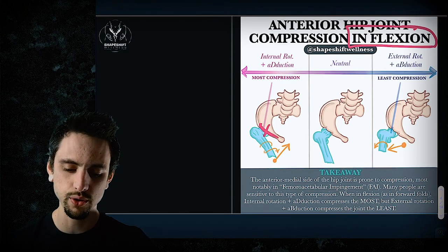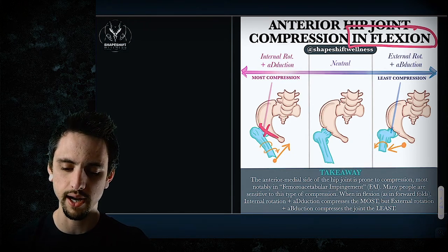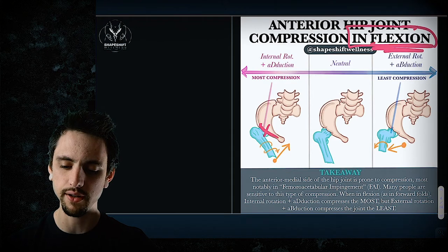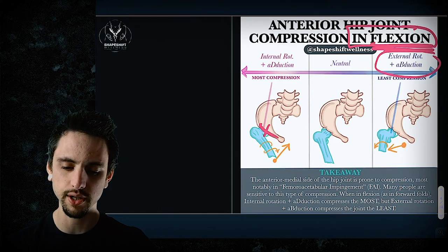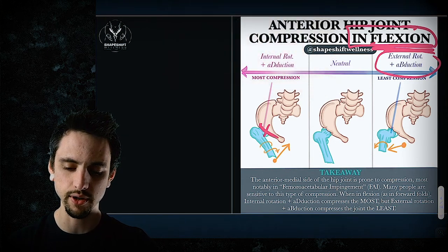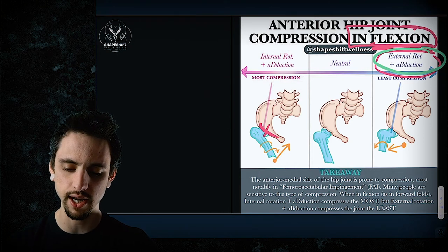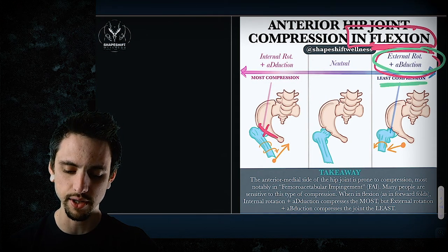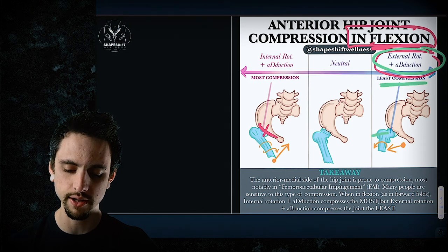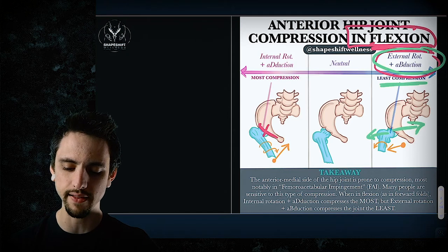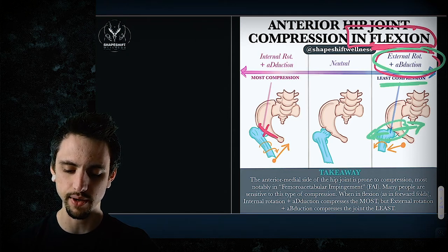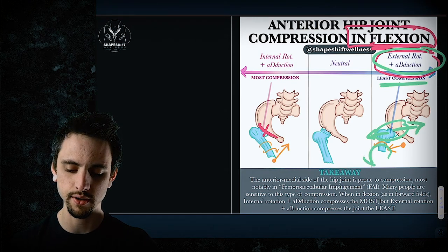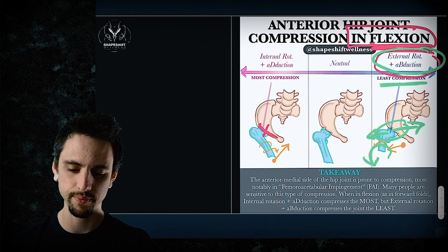So that's the most compression. Neutral would be middle of the road. And then in flexion, external rotation and abduction is going to be the best. So external rotation and abduction is going to have the least amount of compression right here because you're drawing this bone out away. You're widening that space right here. Okay. So you're externally rotating the femur.